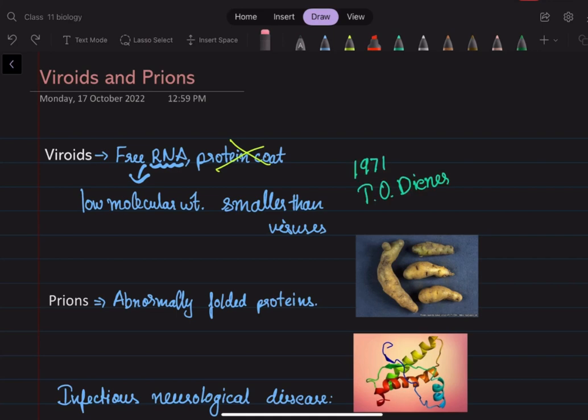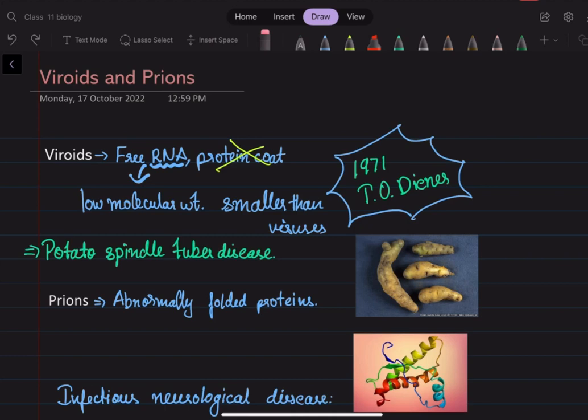These viroids were discovered by T.O. Diner in 1971 and are known to cause potato spindle tuber disease in potatoes. You can see how the potatoes are affected in this picture.